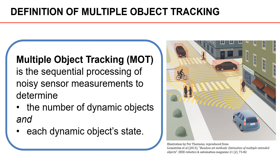Object tracking is a filtering problem. We will review filtering later in this section so that we have it fresh in mind. Please note that you need to know filtering quite well to fully grasp the concepts discussed in this course. Therefore, we strongly recommend that you take the Chalmers X course, Sensor Fusion and Non-linear Filtering for Automotive Systems, before you take this course.